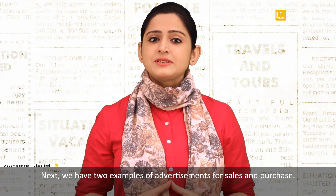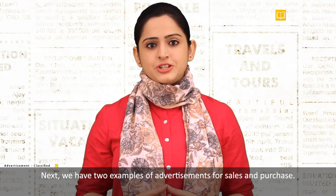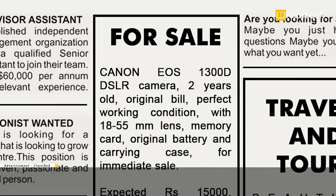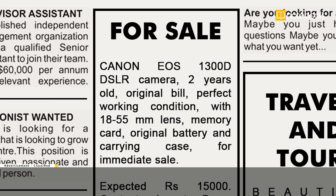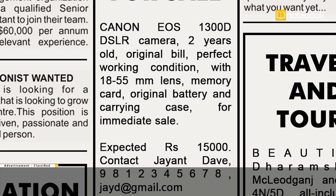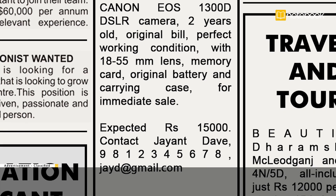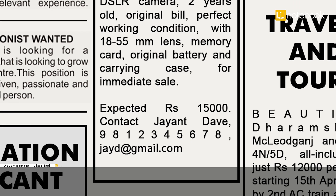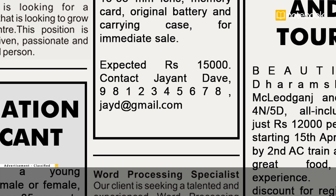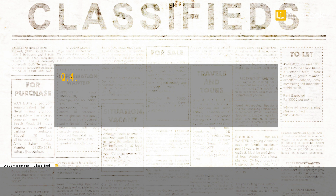Next, we have two examples of advertisements for sales and purchase. You have a DSLR that you want to sell. Write a suitable classified advertisement. For Sale: Canon EOS 1300D DSLR camera, 2 years old, original bill, perfect working condition, with 18-55mm lens, memory card, original battery and carrying case. For immediate sale. Expected Rs. 15,000. Contact Jayanth Dev 9812345678, JaiD at gmail.com.